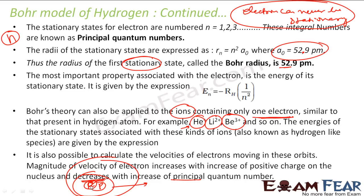If we are not able to understand this, we can ignore it for now because we will study the actual quantum model, where we will explain how velocity impacts the orbitals. There we have the term 'orbitals,' not 'orbit.' Here we are using the term orbit — the orbit is something which does not exist.